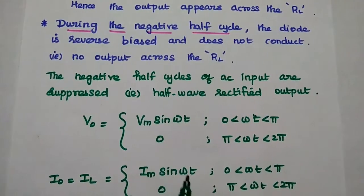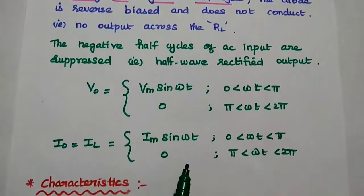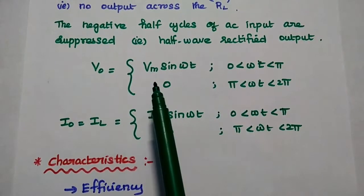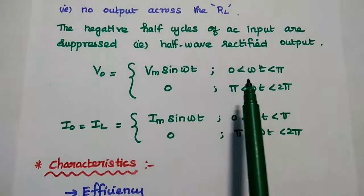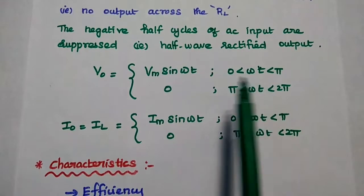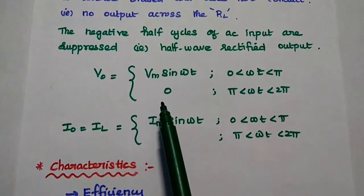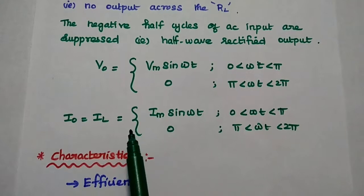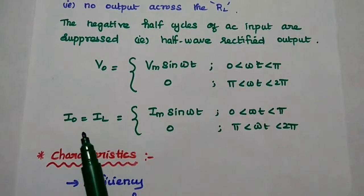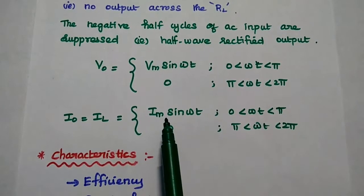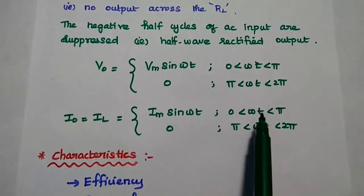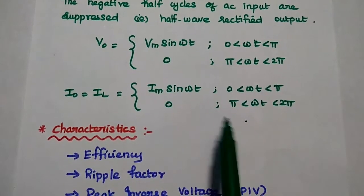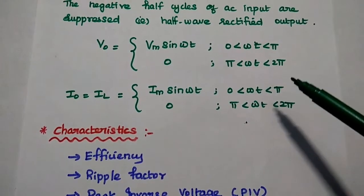The output voltage and output current can be represented in terms of a sinusoidal signal. V₀ = Vm sin(ωt) during the positive half-cycle from 0 to π, where Vm is the maximum voltage, and the output is 0 during the negative half-cycle. Similarly, the output current (load current) equals Im sin(ωt) during the positive half-cycle, and 0 during the negative half-cycle. These two representations are very important.